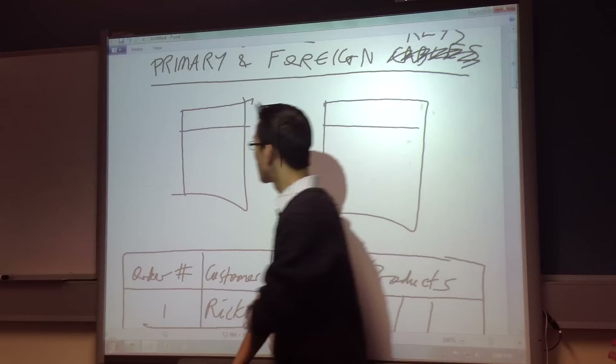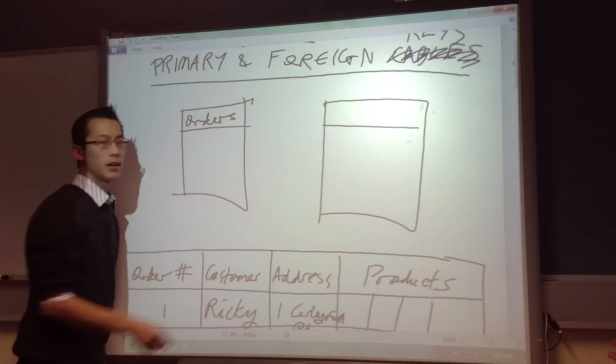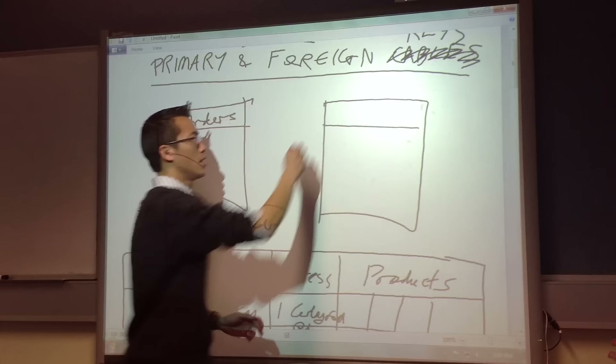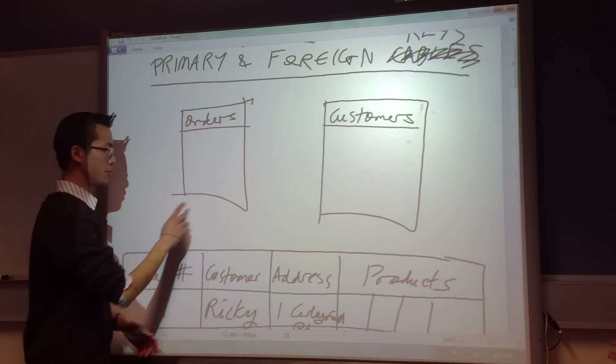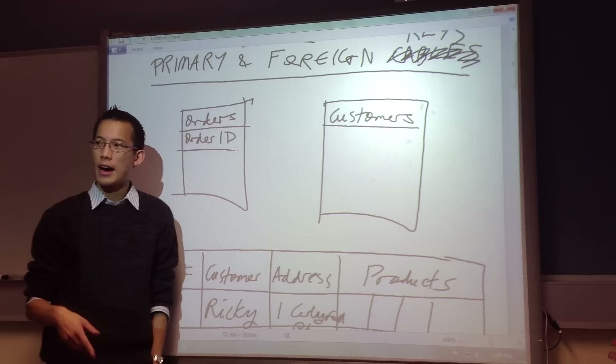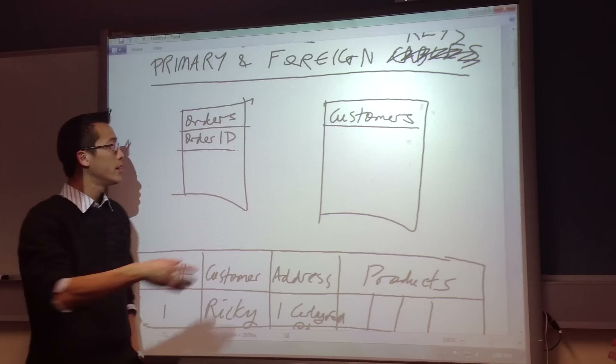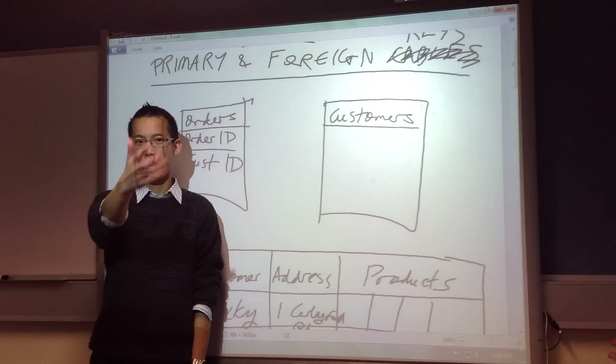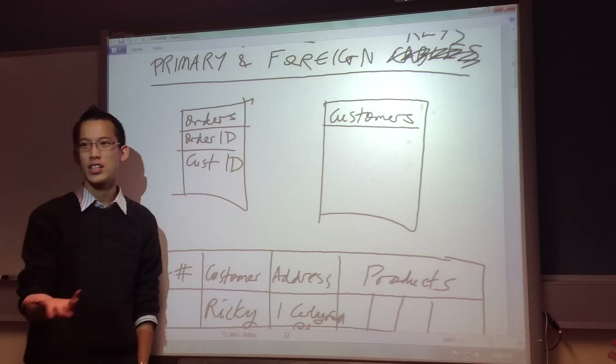First I'll have an orders table, and then a customers table. In orders, I'll still have an order ID — 1, 2, 3, 4, 5, 6, 7. The next thing I'd have is information about the customer. I don't need to put their name and address every single time because that's redundant. Instead, I might have a customer ID — customer 5, customer 23. Even there, I'm saving space because just having that number is shorter than their full name.